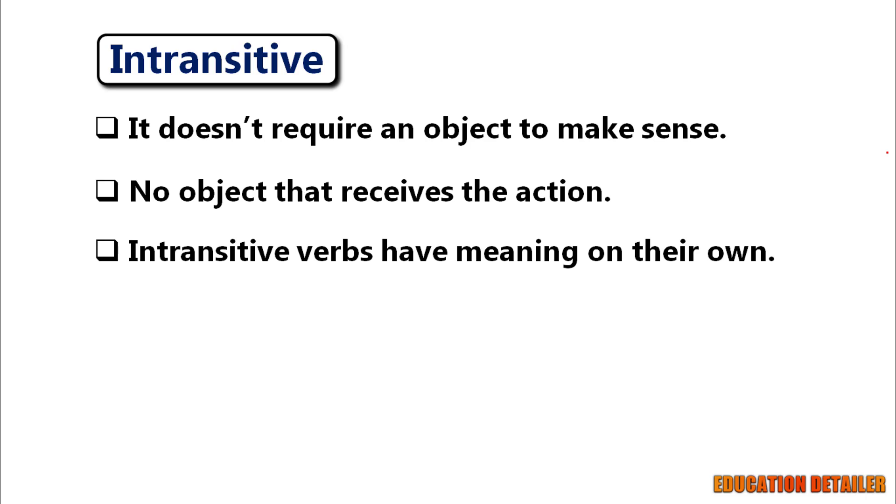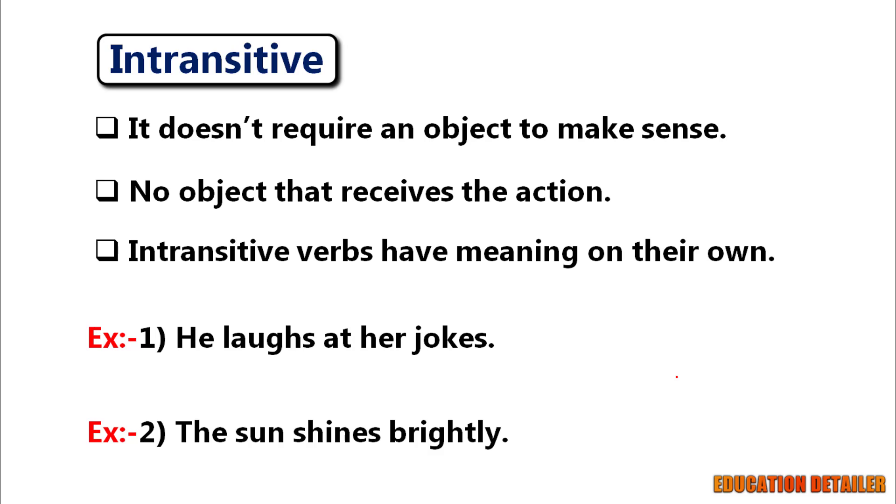Let's look at some examples. He laughs at her jokes. The sun shines brightly. Here the verbs laugh and shine do not require objects to complete their meaning.